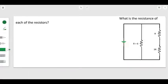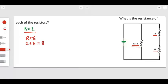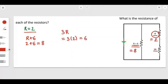Now for the second part: finding the resistance of each resistor. Since R equals 2, the first path has resistance R plus 6, which is 2 plus 6 equals 8 ohms. The second path has two resistors: R equals 2 ohms, and 3R equals 3 times 2 equals 6 ohms. So the resistors are 8 ohms, 2 ohms, and 6 ohms respectively.